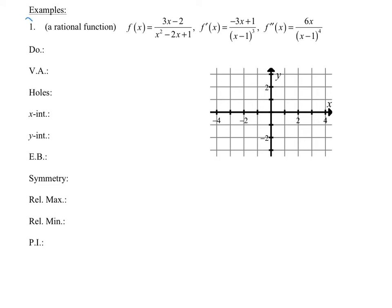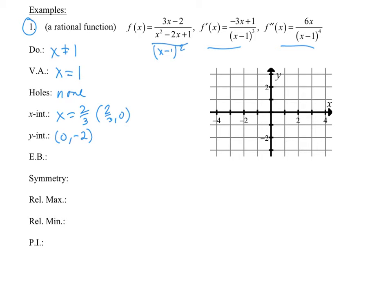Number one, we already have the first derivative and the second derivative given to us, and this is a rational function: (3x − 2) all over (x² − 2x + 1). Notice that I can factor the denominator to (x − 1)², so our domain is x can't be 1. Vertical asymptote is x = 1. No holes, since nothing canceled. The x-intercept comes from the numerator, so x = 2/3. Plugging in x = 0 gives a y-intercept of (0, −2).